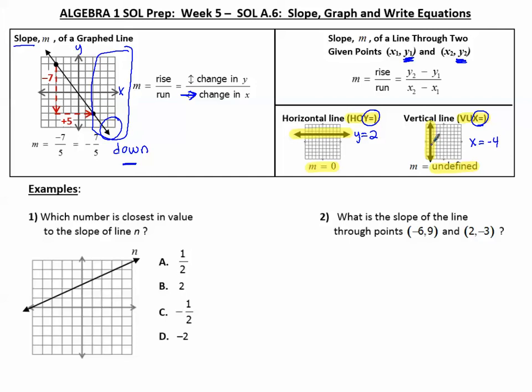Let's do some examples. Which number is closest in value to the slope of line N? So here we see line N. I'm going to look at the right side of the graph, and I see that the line is going up. Up is a positive slope. So I see the negative ones, and I do not want that. So now I'm looking for which one of these.